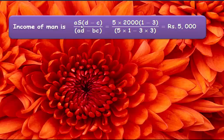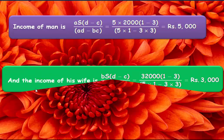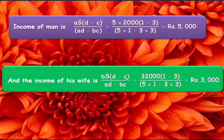The income of the man is aS(d-c)/(ad-bc) = (5×2000×(1-3))/(5×1-3×3) = Rs. 5,000. And the income of his wife is bS(d-c)/(ad-bc) = (3×2000×(1-3))/(5×1-3×3) = Rs. 3,000. So 5,000 and 3,000 are the incomes of the man and his wife.